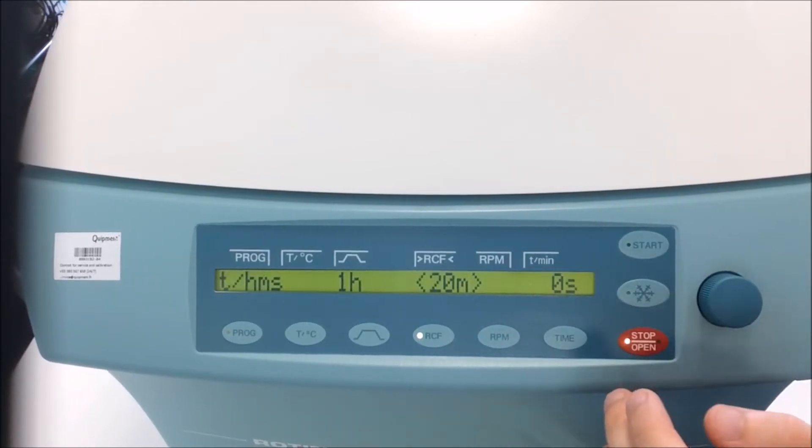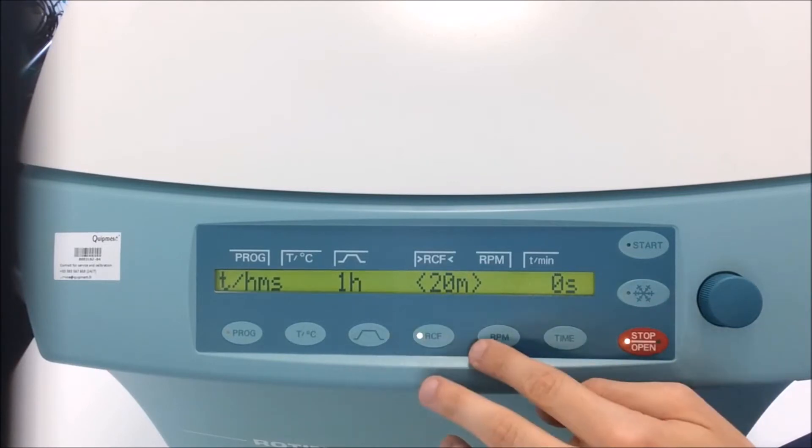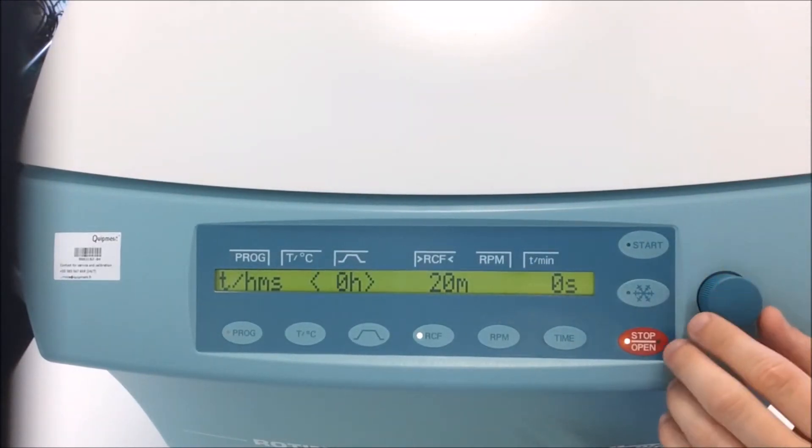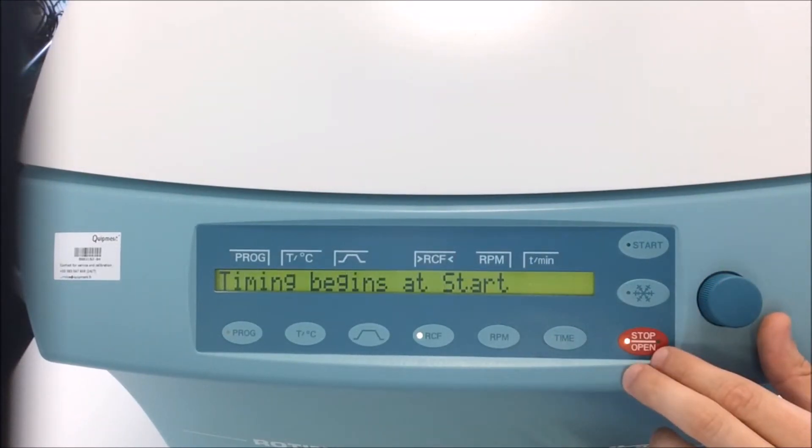And for the duration, I will switch between the units. You can just press on time for selecting seconds or hours. I will decrease to 20 minutes.